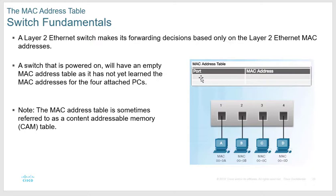The switch doesn't know where PC D is, so it floods the frame out ports 2, 3, and 4. PC D receives it and sends back a response, which lets the switch record PC D's MAC address on port 4. Now the switch has a table: port 1 is PC A's MAC, port 4 is PC D's MAC. After that, any packet from A to D just comes in on port 1 and goes out port 4 — ports 2 and 3 are left alone.